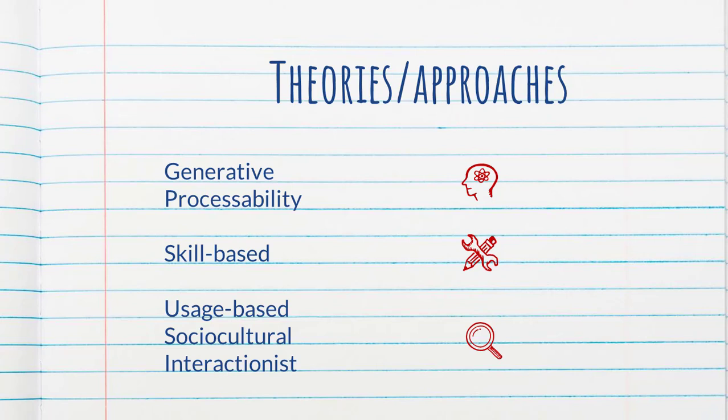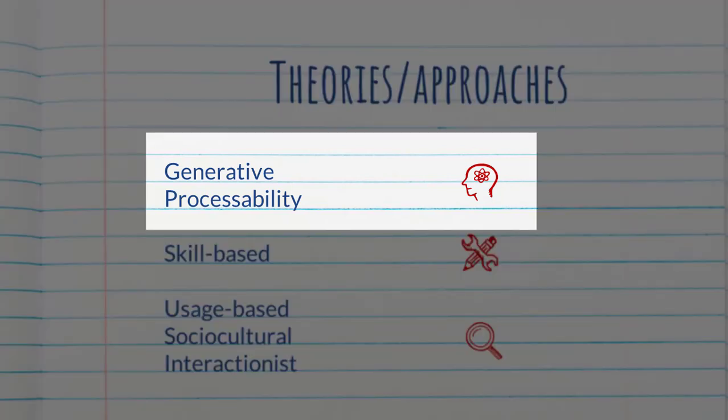I am going to simplify a lot and offer my interpretation of her summary and essentially there are these three camps, if you will. So the first one, generative processability theory, they view language acquisition as implicit. And so they view instructional interventions such as corrective feedback to have a very limited or no role in acquisition.